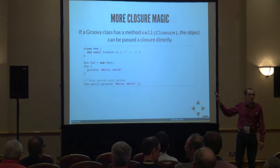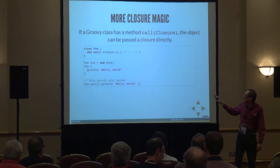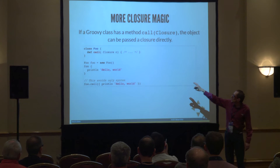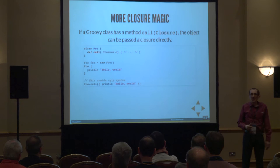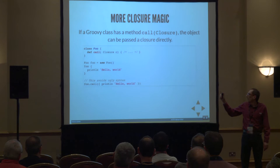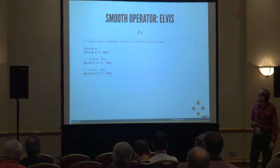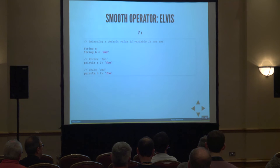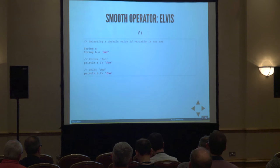If you have a specific method called 'call' in your class, it means you can actually call the class object as a function — like a C++ functor. So instead of ugly syntax, by putting the closure on there I can just say 'Foo' with curly braces. Then there's the Elvis operator, which makes things a lot easier. Normally you'd use the ternary operator, but the Elvis operator says: if A is not set, use the value behind it. So I will print 'foo' because A isn't set, but because B is set, it will print the value of B.